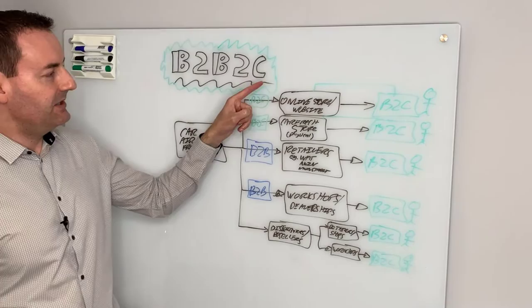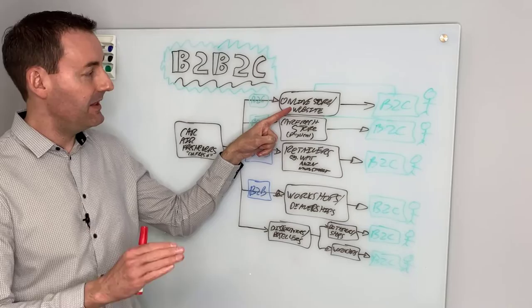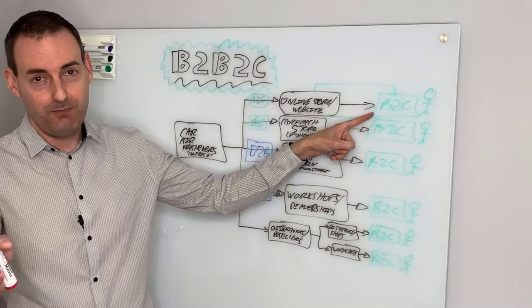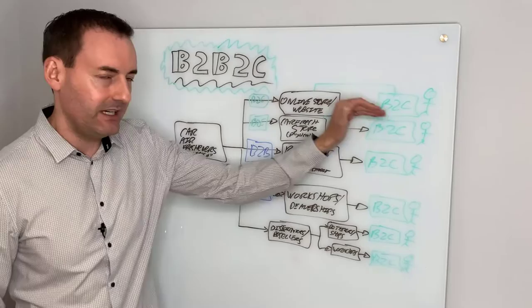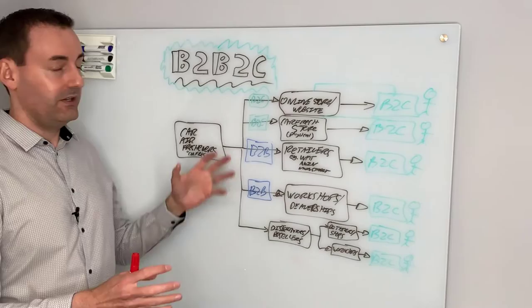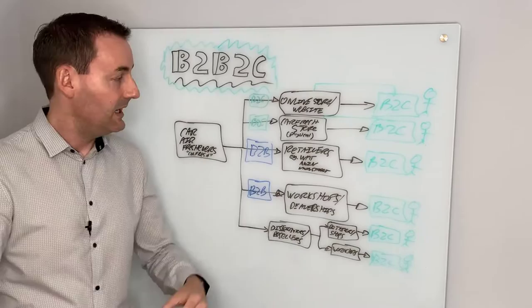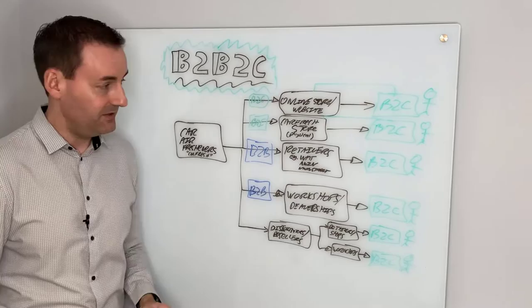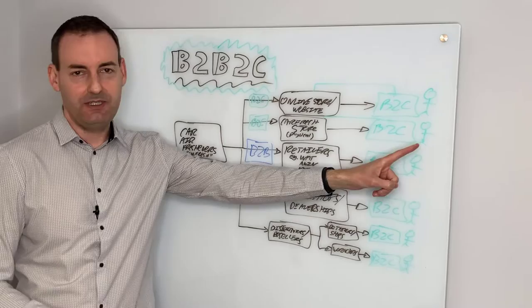Their first option is to set up their own online store and sell directly from their website — you log in, buy it, get it delivered to your door. That is a straight B2C direct transaction. Their next option is a physical store — a CarFresh branded store on the high street or in the mall where you go in and buy your car air fresheners. Also a straight B2C transaction — they're selling directly to you, the end customer.